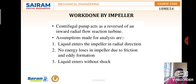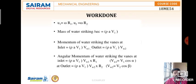Liquid enters without shock. Sometimes because of turbulent water flow, the impeller undergoes shock, but in our study we assume there is no shock. Then u1 is the velocity component of absolute velocity, also called the linear velocity or peripheral velocity.